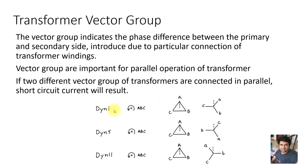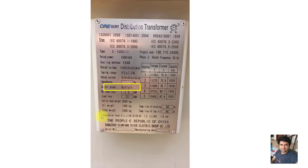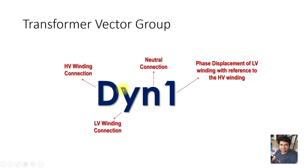The vector group on the nameplate is shown as DY11. This means the primary winding is in delta and the secondary is in star, and the phase shift is shown by the number. 'D' means delta, 'Y' means star — this is a two-winding transformer with primary connected in delta and secondary in star.